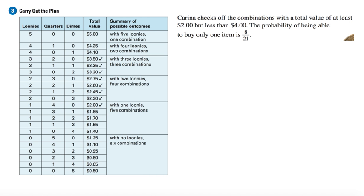And it takes a lot more time than going to her locker to count the coins, but I digress. Let's carry out the plan, shall we? All right, so Carina checks off all the combinations with a total value of at least two dollars but less than four dollars. The probability of being able to buy only one item is 8 over 21.